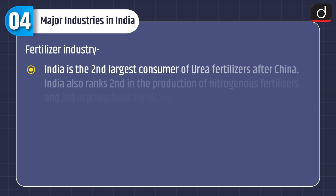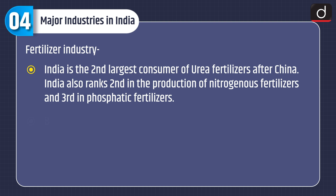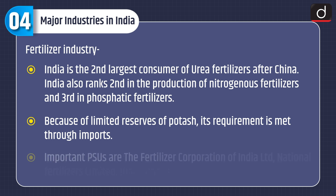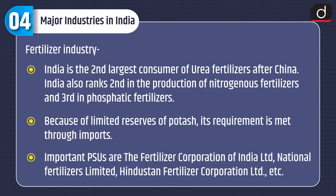Fertilizer industry: India is the second largest consumer of urea fertilizers after China. India also ranks second in the production of nitrogenous fertilizers and third in phosphatic fertilizers. Because of limited reserves of potash, its requirement is met through imports. Important PSUs are the Fertilizer Corporation of India Ltd, National Fertilizers Ltd, and Hindustan Fertilizer Corporation Ltd.